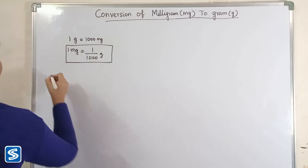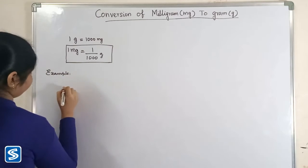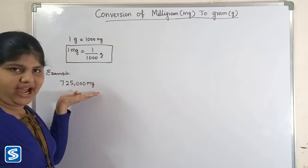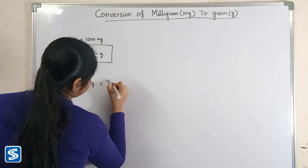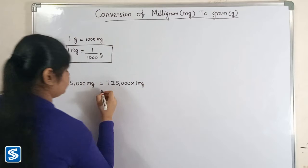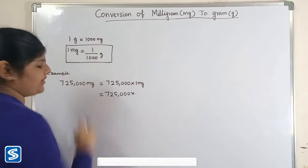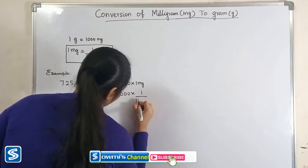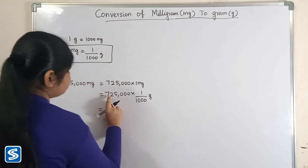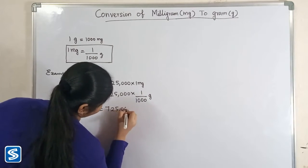Now we will take some examples. For example, we can take 725,000 milligrams. 725,000 milligrams can be written as 725,000 multiply one milligram. Now we have to substitute one by thousand grams in the place of one milligram. So 725,000 multiplied by one will be 725,000.